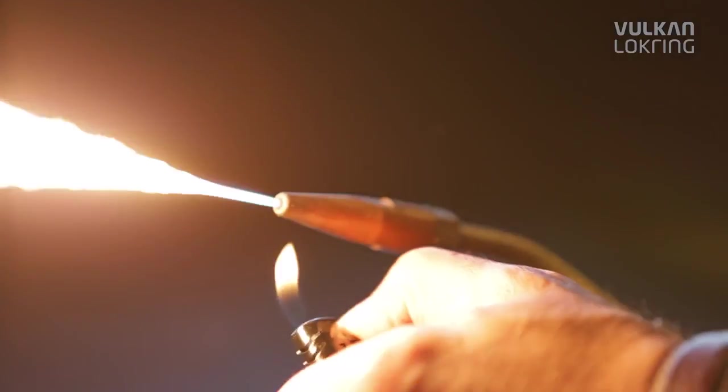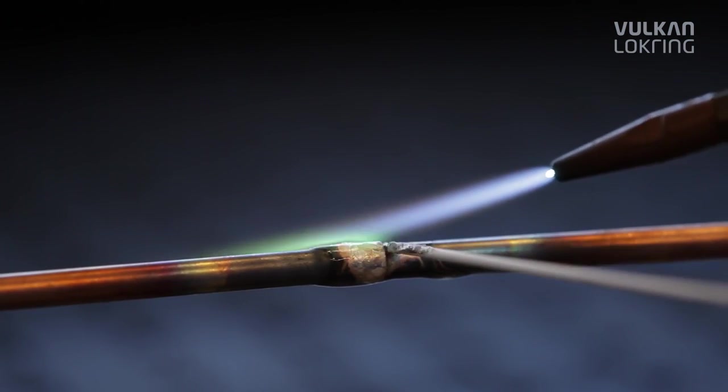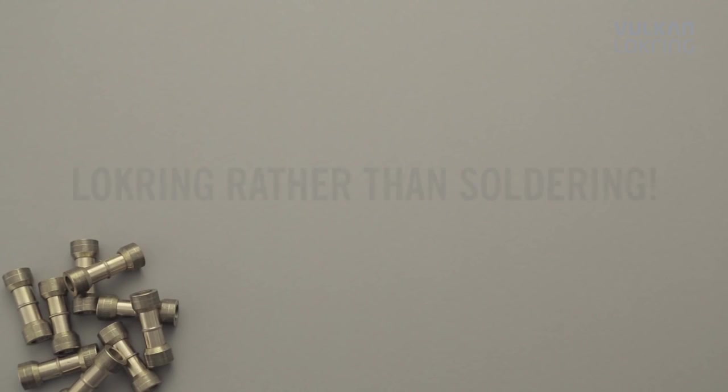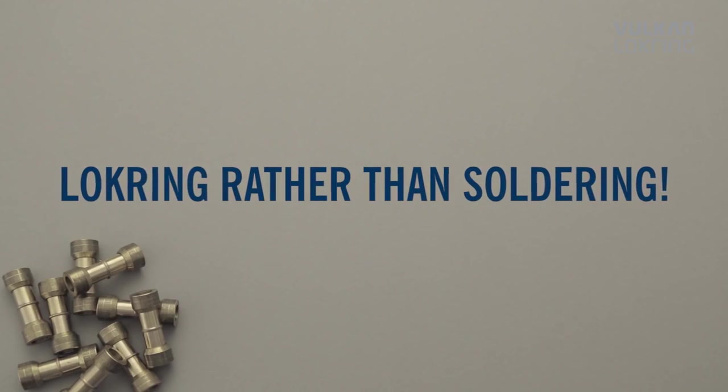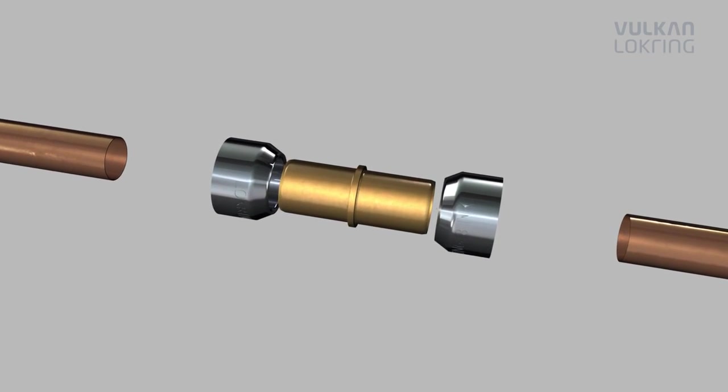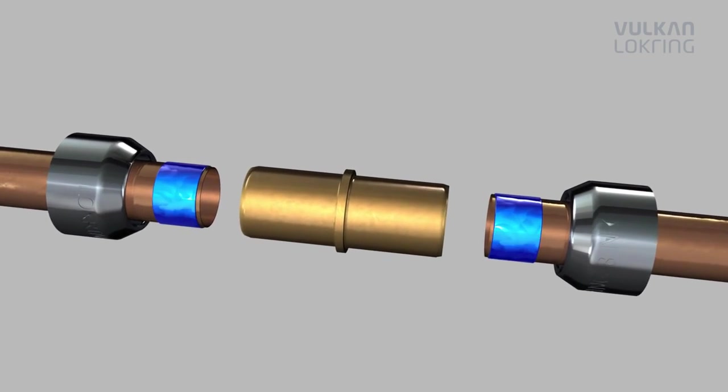Soldering often causes problems during repairs on refrigerant tubes in domestic appliances and small chillers. Thanks to our solder-free lockring tube connections, this is finally a thing of the past.